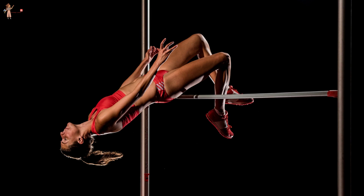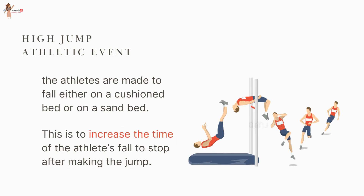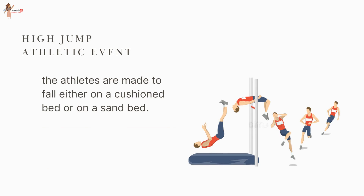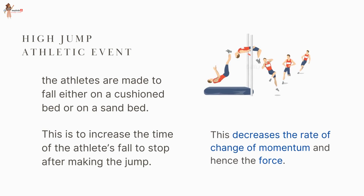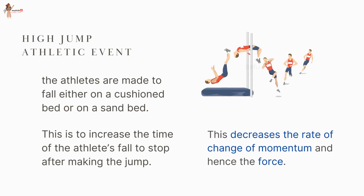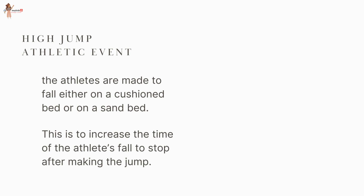In a high-jump athletic event, athletes are made to fall either on a cushion bed or on a sand bed. This increases the time of the athlete's fall to stop after making the jump. This decreases the rate of change of momentum and hence the force.